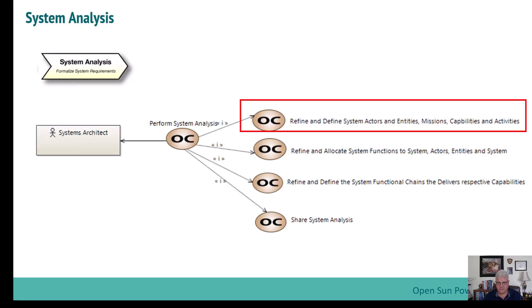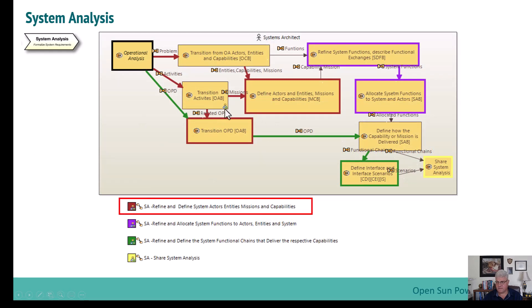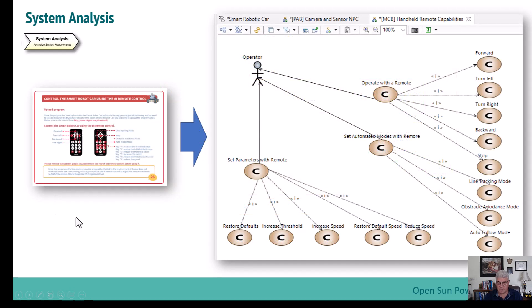What we're going to do first is start by defining the capabilities of the system and gathering that information. From the process flow, that's focusing on this red set of lines here. We're going to define the actors and entities and capture that in a mission capabilities blank diagram. For this first capabilities diagram, I started with the information from the user manual on the smart car remote. I show an operator with a remote, setting automated modes with the remote — there are various automated modes available — and also some parameter settings that were all in that user manual.